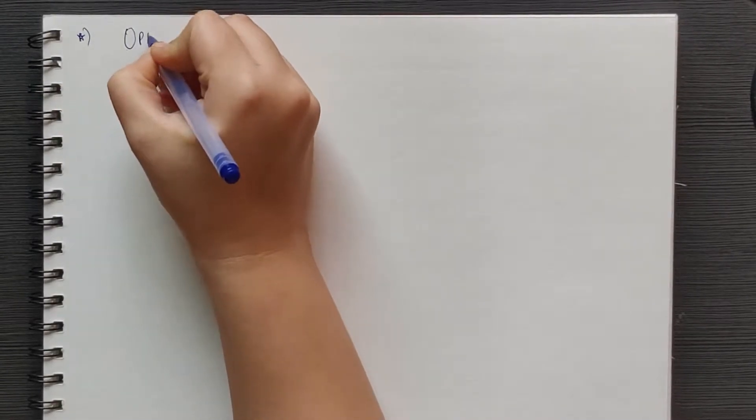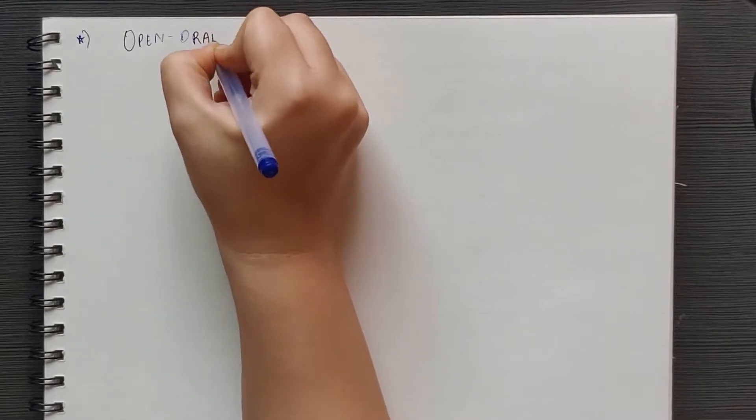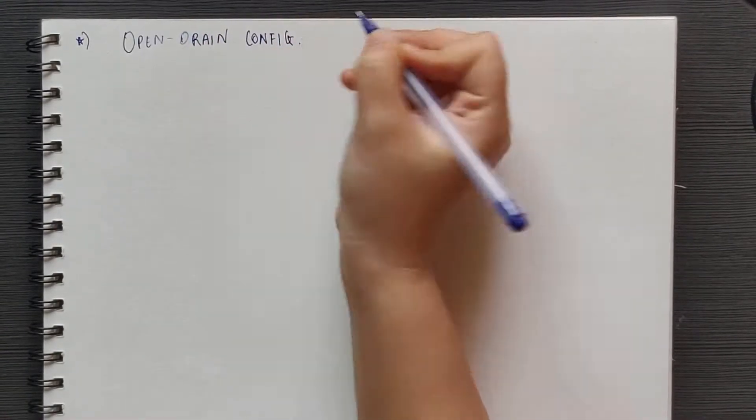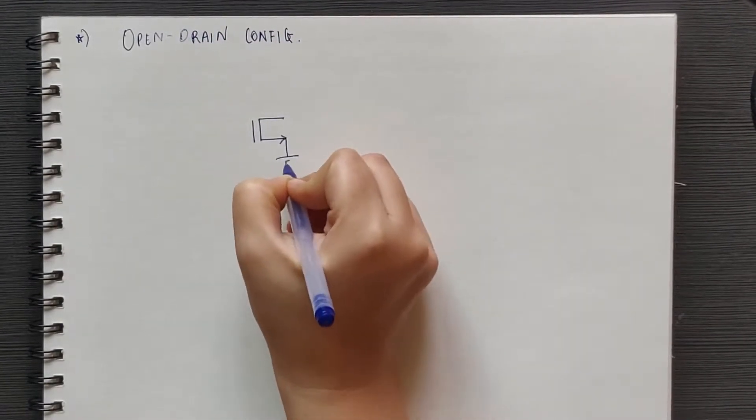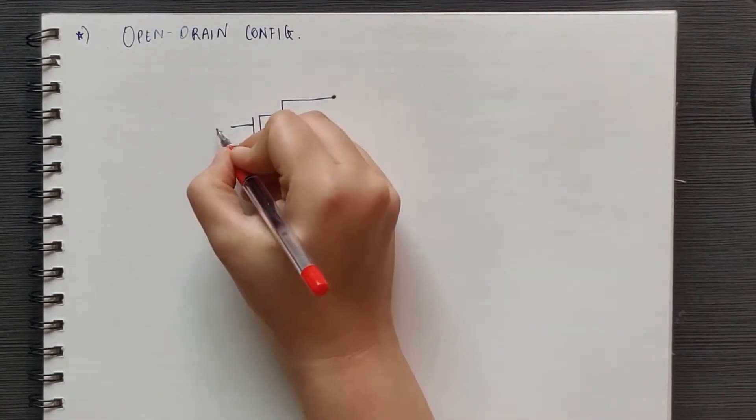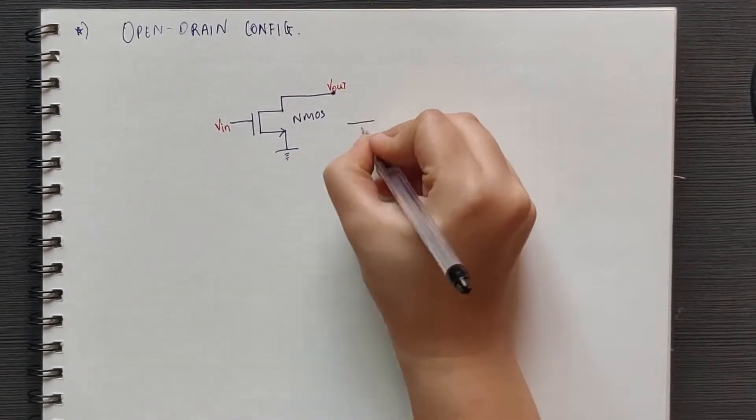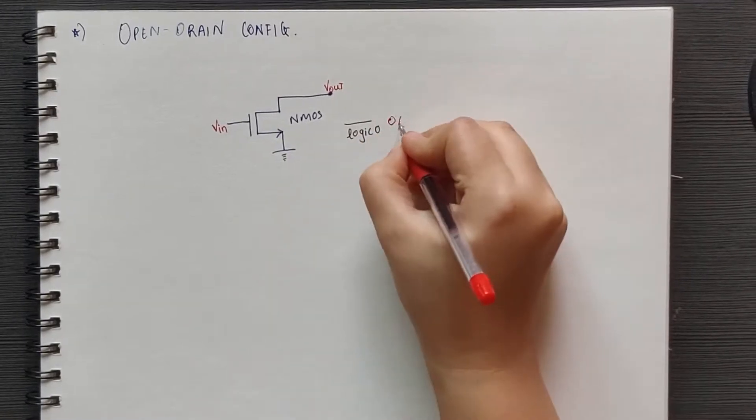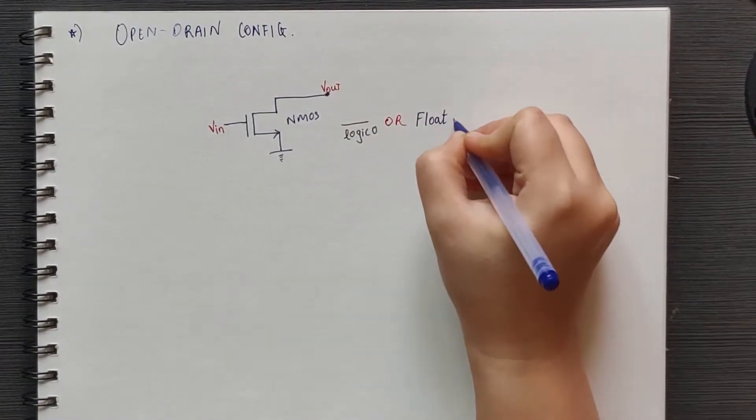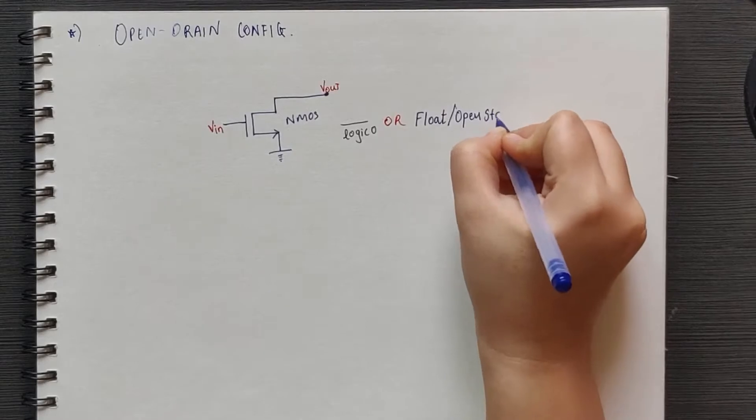This issue is mitigated by using something called as open drain configuration. Let's understand what open drain is. Here we only have an NMOS. The PMOS is removed. Thus, you can get either logic 0 at the output, or it will float or is in open state.